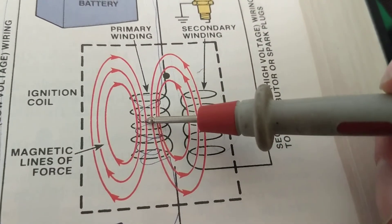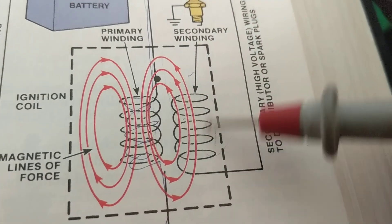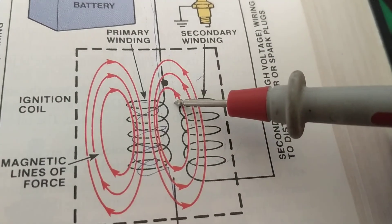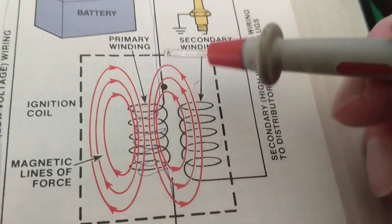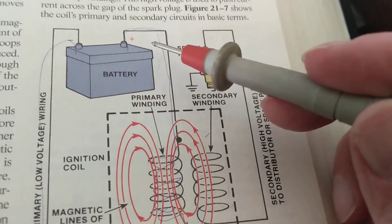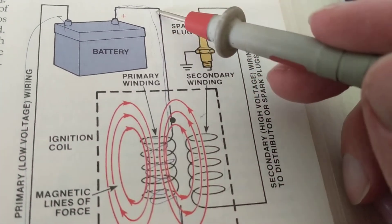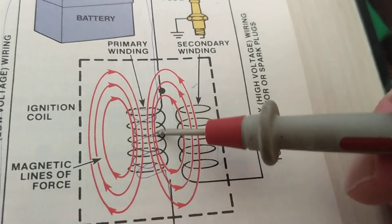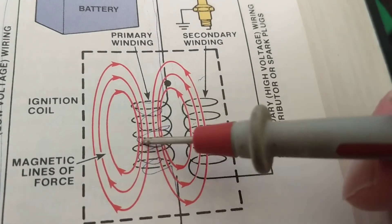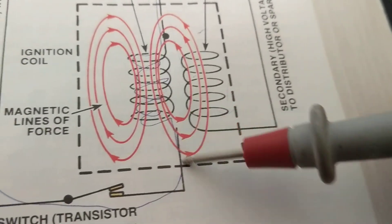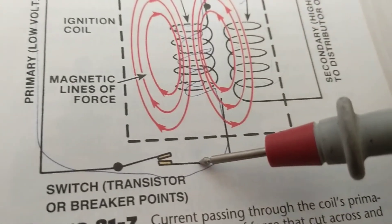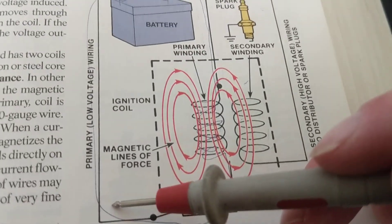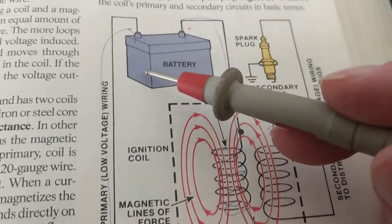When you take a wire and make it into turns, and put one winding next to another, you have a transformer. Current flows from the positive, goes through the primary turns, and eventually goes through a switch which turns it on and off.